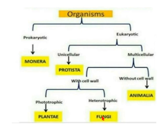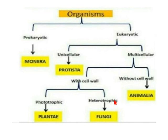Among multicellular organisms with a cell wall, there are two types: phototrophic, which gives us Plants, and heterotrophic, which gives us Fungi. Plants are autotrophic due to the presence of chloroplast, whereas Fungi are heterotrophic as they lack chloroplast. Multicellular organisms without a cell wall give us only one kingdom — Animalia. So Animalia are multicellular and eukaryotic without a cell wall, Fungi are heterotrophic with a cell wall and eukaryotic, and Monera are prokaryotic.